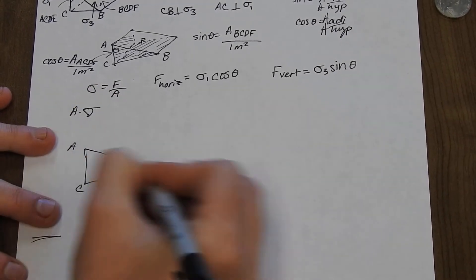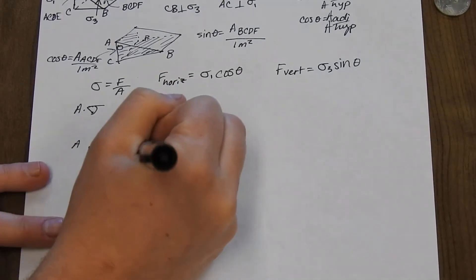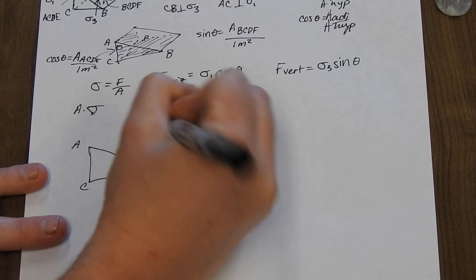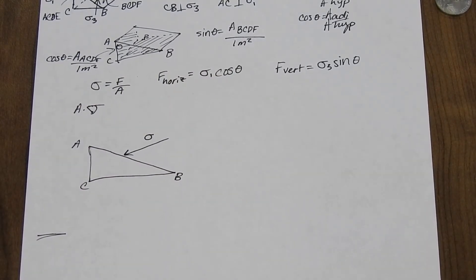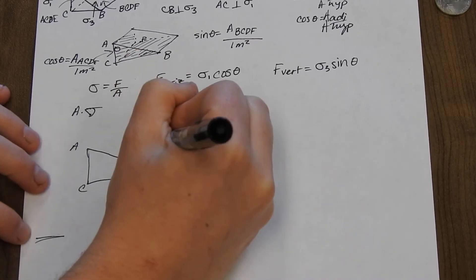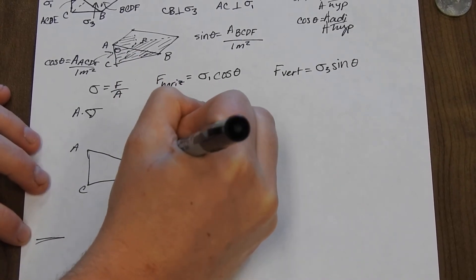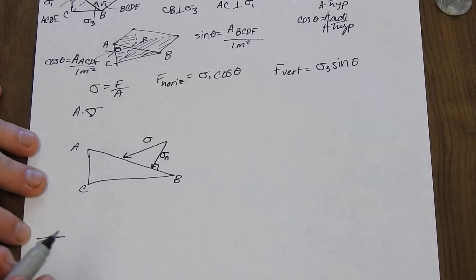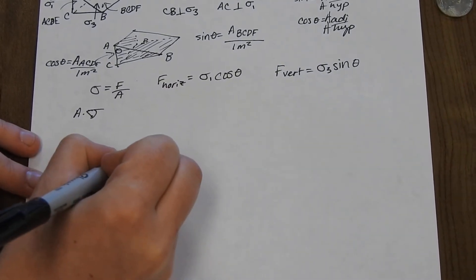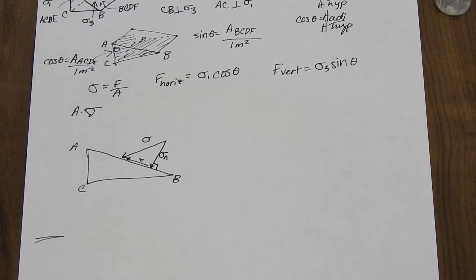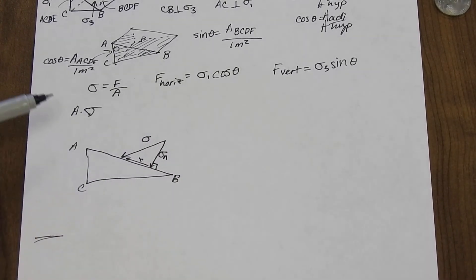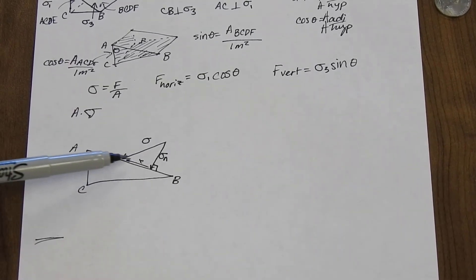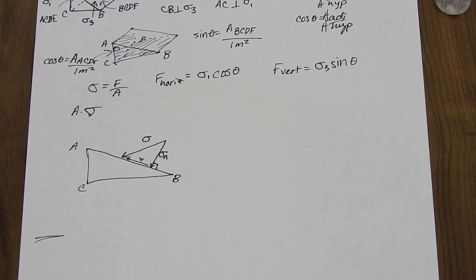Let's go back to that randomly oriented stress and think about it only in terms of the triangle ABC. That stress is going to have normal and shear components. The normal component is going to act down and be perpendicular to the plane, and the shear component is going to act up and go parallel to the plane — using tip-to-tail vector addition. But sigma n and the shear stress are not horizontal or vertical, so we need to decompose them further.